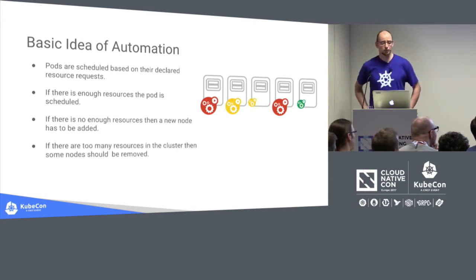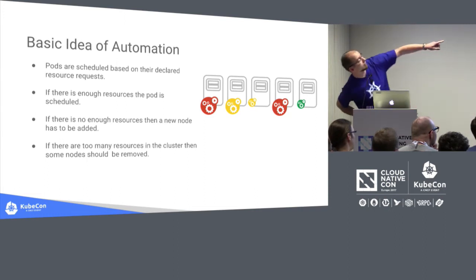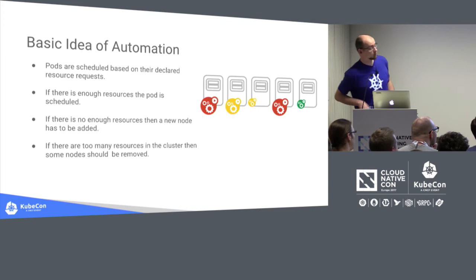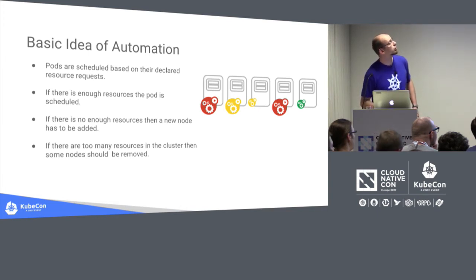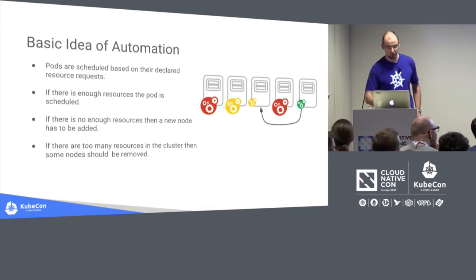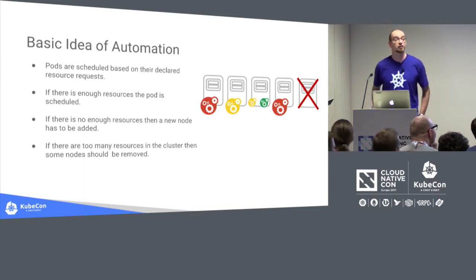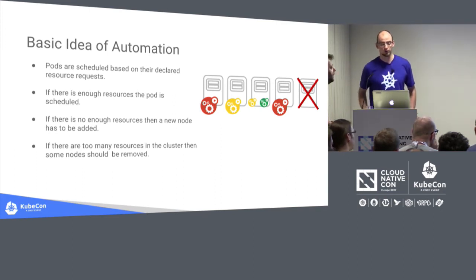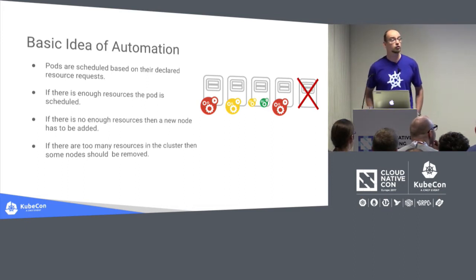Sometimes there are too many resources in your cluster — for example, nodes three and five have little utilization with only small pods. We could move the pod from node five to node three, making node five empty so it can be removed. That's exactly what cluster autoscaler does: it tries to add nodes when they are needed and remove them when they are not needed anymore, possibly reshuffling pods.